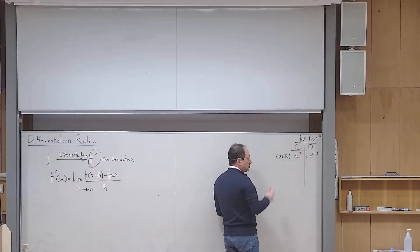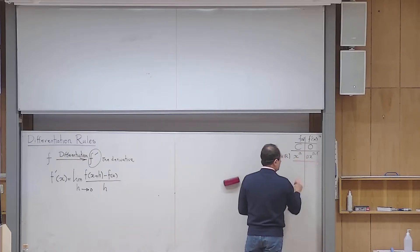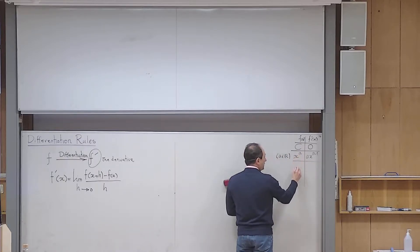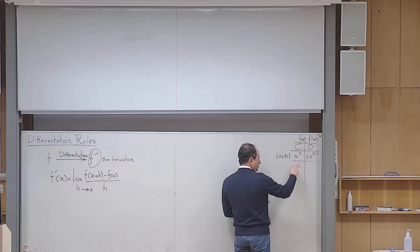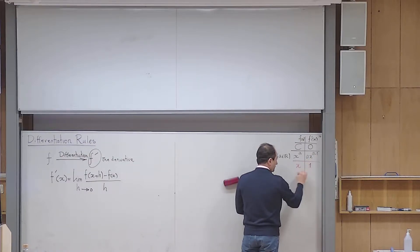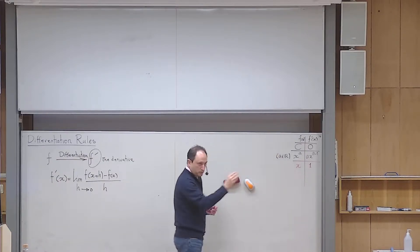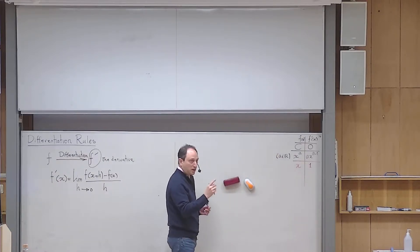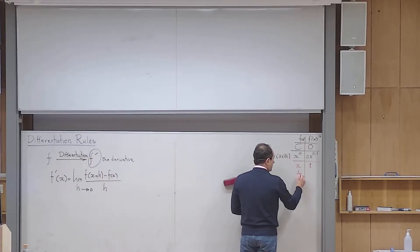Some special cases deserve attention. If I choose a = 1, the function is x, and the derivative becomes 1·x^0 = 1. So the derivative of the identity function x is 1. Please have this in your memory.